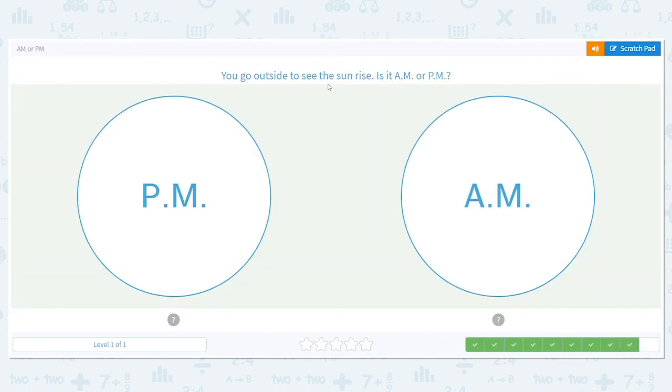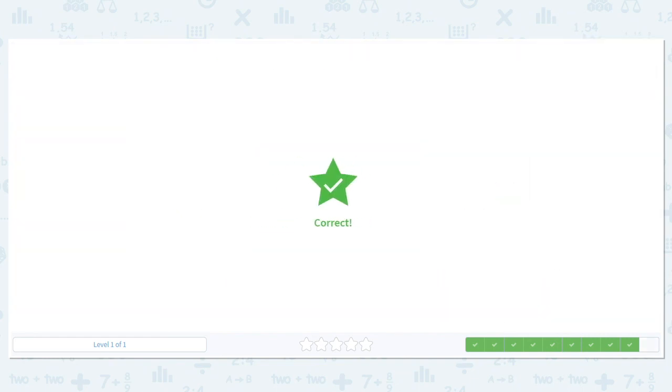Let's do one more. You go outside to see the sunrise. Is it A.M. or P.M.? We're seeing the sunrise, that means it's coming up. When does the sun come up? Does it come up at night or does it come up in the morning? It comes up in the morning, so that means A.M.